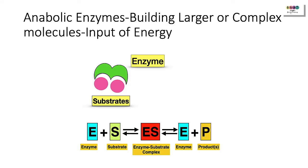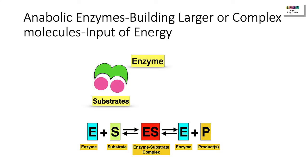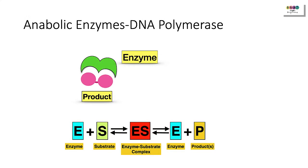As well as catabolic reactions, we also have anabolic reactions — building reactions where simple molecules come together to form larger, more complex molecules, requiring an input of energy. Anabolic enzymes are involved in these building reactions. A classic example of an anabolic process is photosynthesis, and an example of an anabolic enzyme is DNA polymerase, which is involved in making DNA.